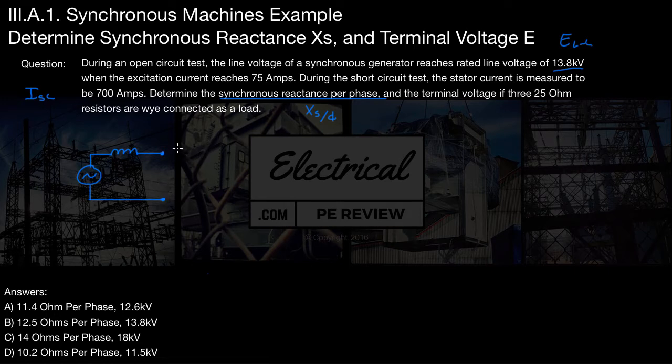Now, since this problem is asking for Xs per phase, that means that this right here has to be our neutral. And up here, this is going to be our phase. So that means that our 13.8 kV, our line-to-line, has to be divided by the square root 3. And this gives us a line-to-neutral value of 7,967 volts.